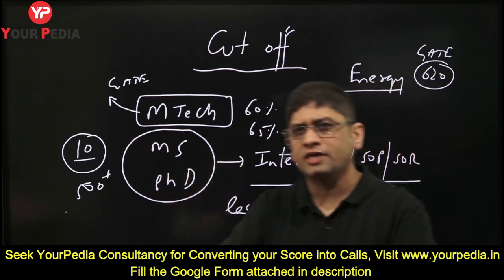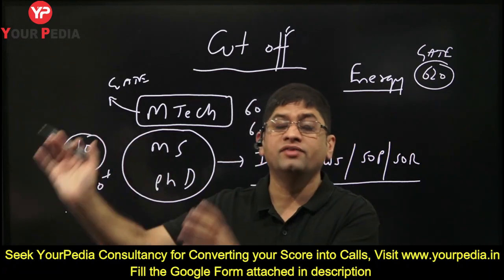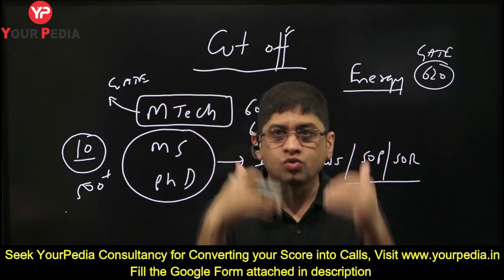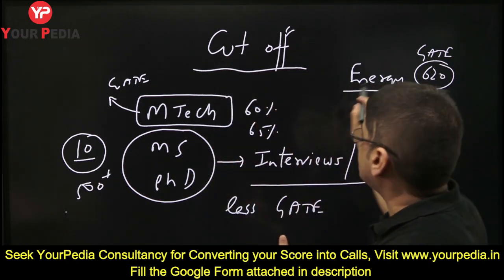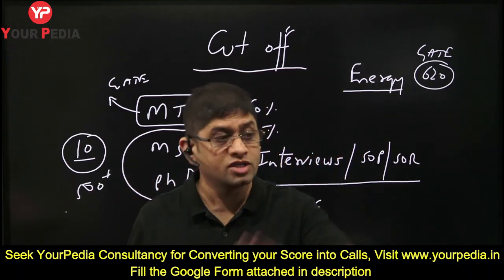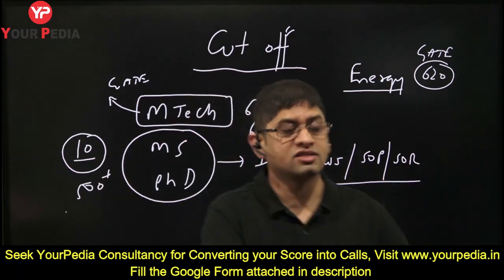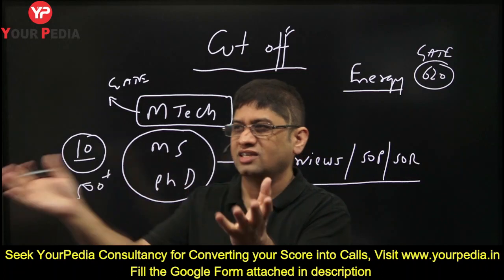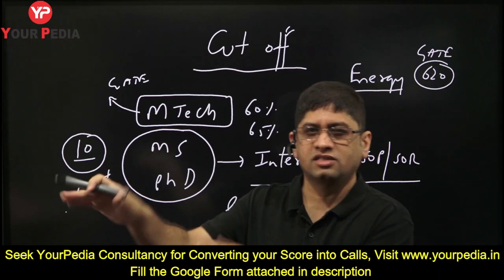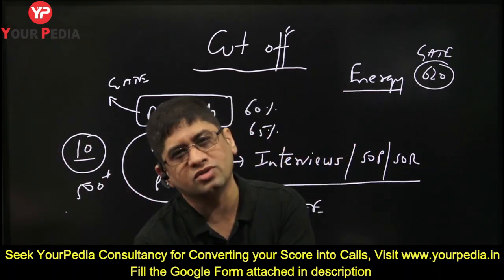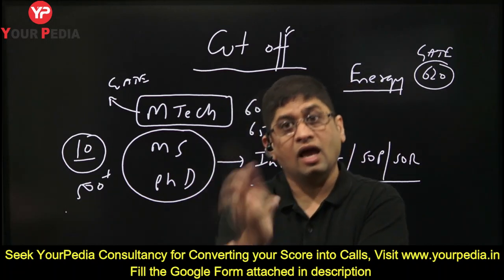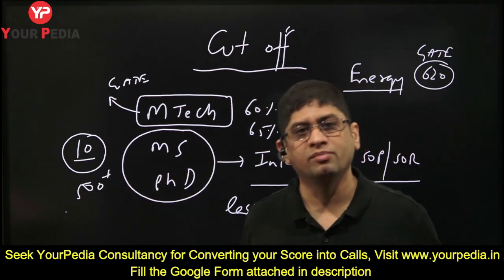If your GATE score is less, we advise that you apply for MS courses because MS is better than M.Tech and opportunities are more. A student who might get M.Tech in Energy may get MS in a core branch they are interested in. For example, if you are interested in computer science and not in interdisciplinary fields like data science, and you are offered M.Tech in data science versus MS in computer science — you should join MS in computer science.